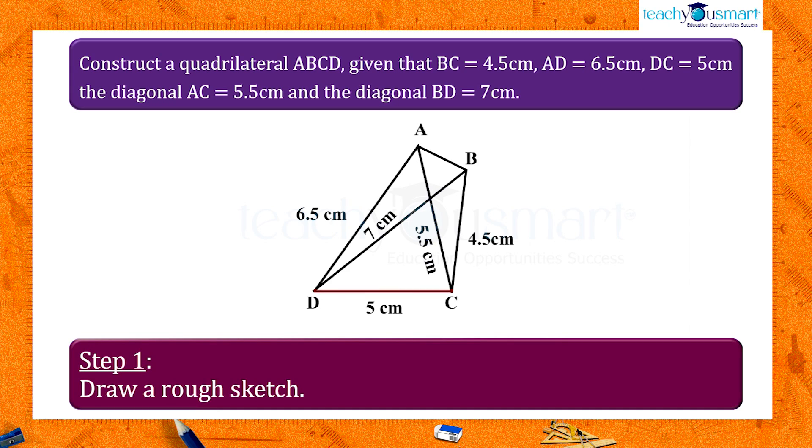With DC equals 5 centimeters, AD equals 6.5 centimeters, BC equals 4.5 centimeters, AC equals 5.5 centimeters, and BD equals 7 centimeters.